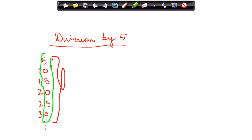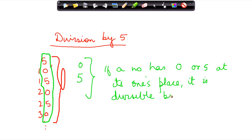we only have two numbers: one is 0 and the other one is 5. So what does the rule come? The rule is: if a number has 0 or 5 at its ones place, it is divisible by 5.